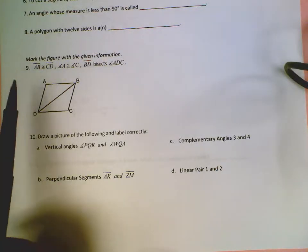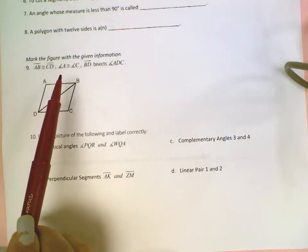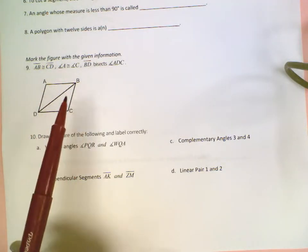Starting with number 9, it tells me to mark the figure with the given information. That means I'm going to be putting tick marks and arc symbols depending on what it tells me here.